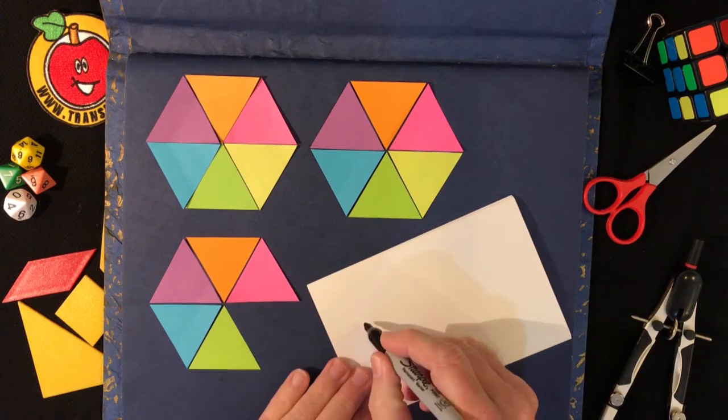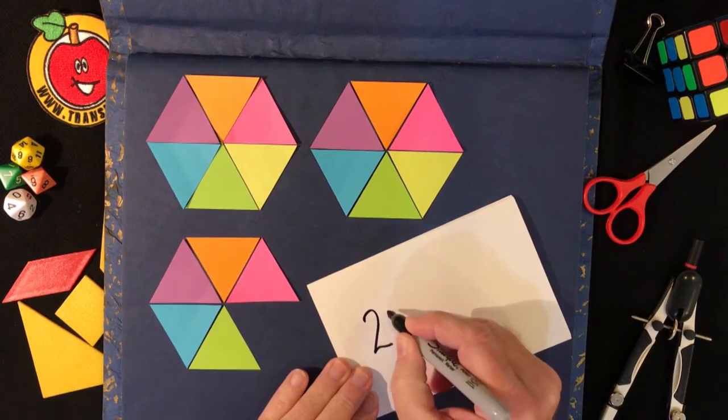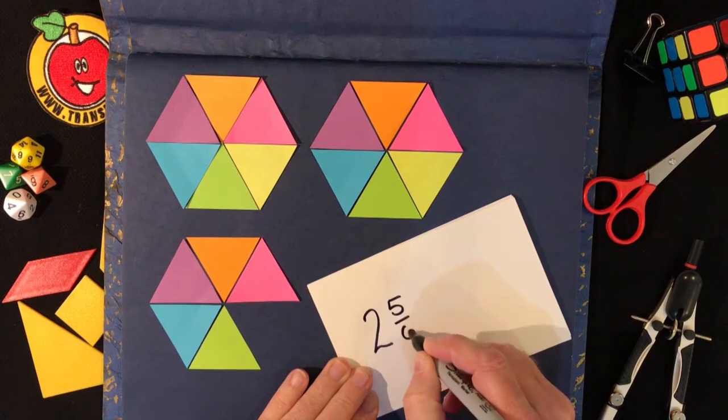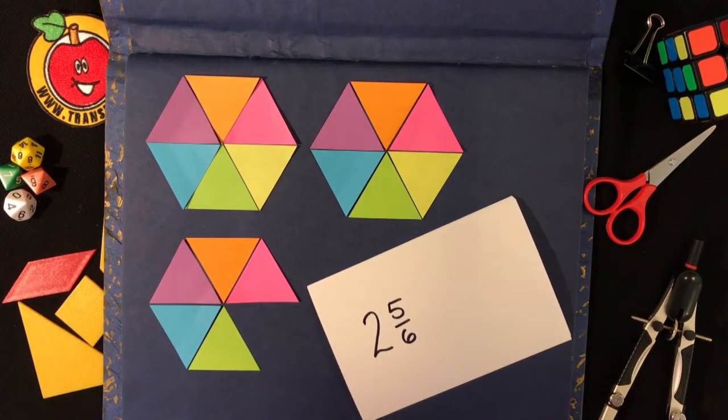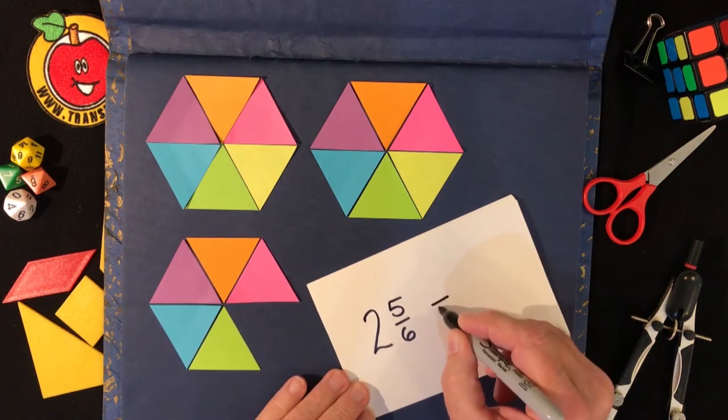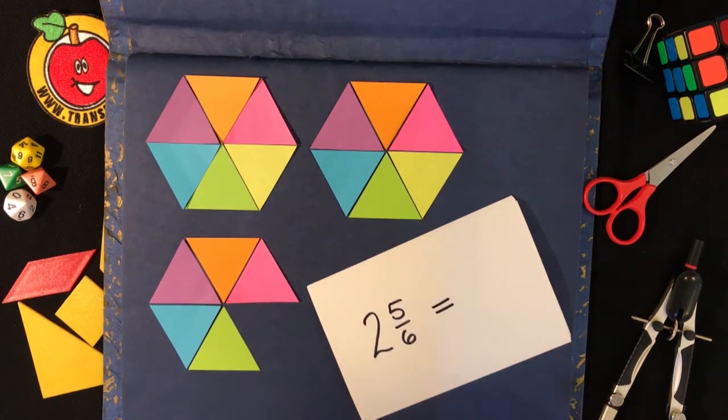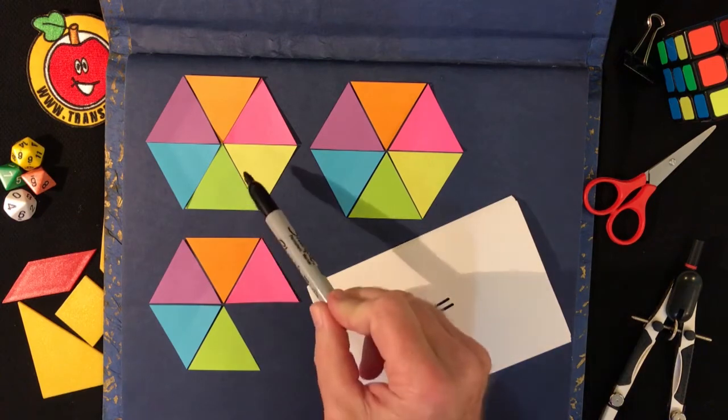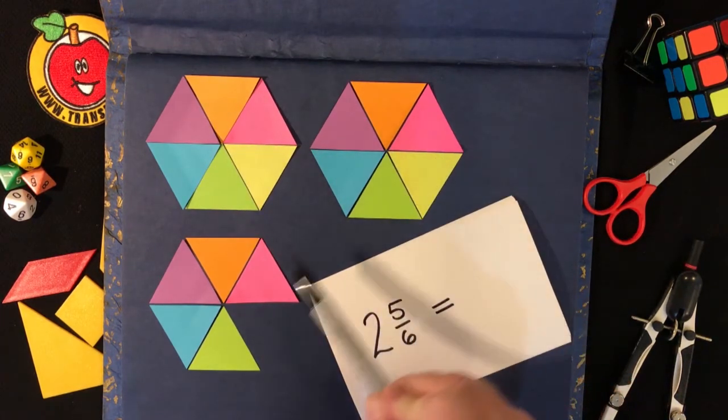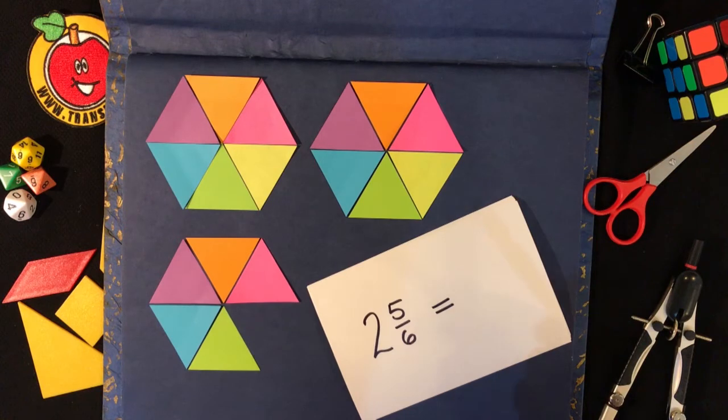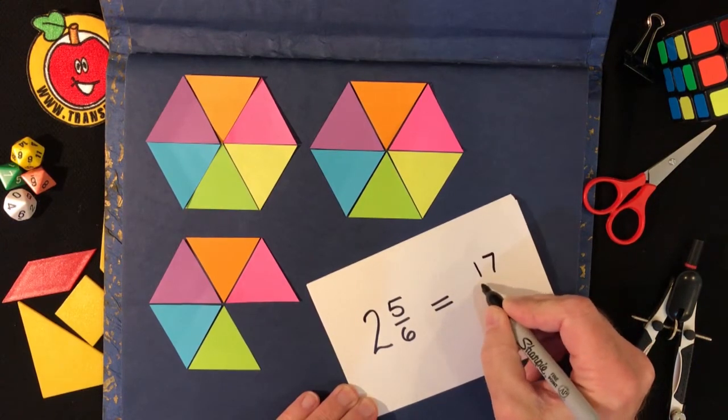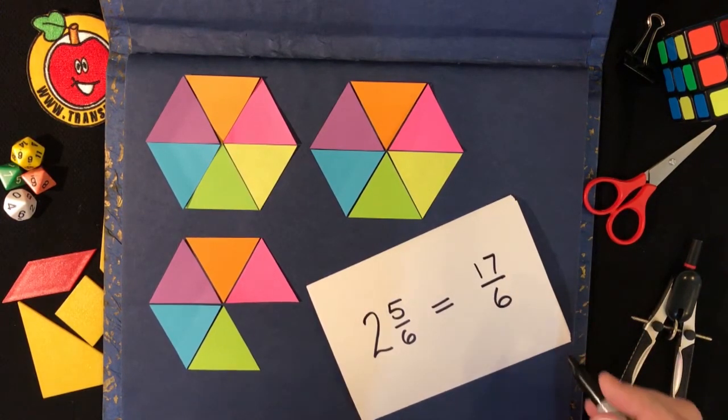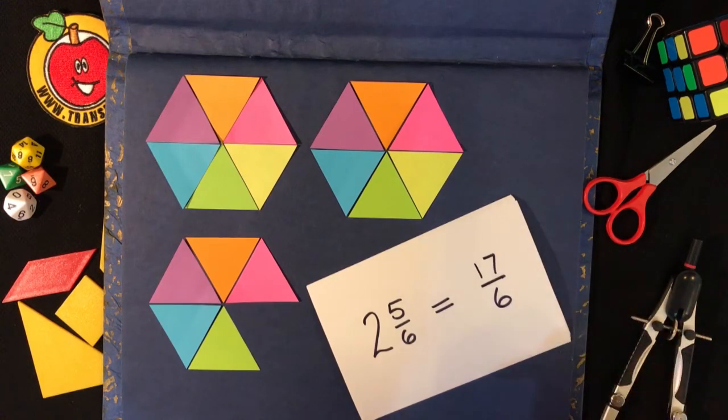Well we have two whole hexagons and five sixths of a hexagon. Now that is the same as saying how many sixths there are all together. So there are six of them here, six of them here and five of them there. Add those together: six plus six plus five, that is seventeen and each of them is a sixth so we can write that down as seventeen sixths.